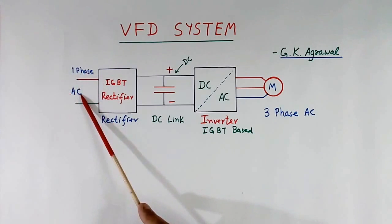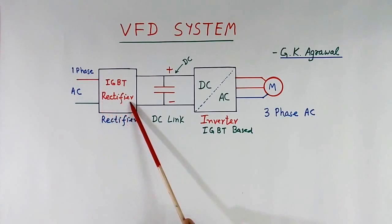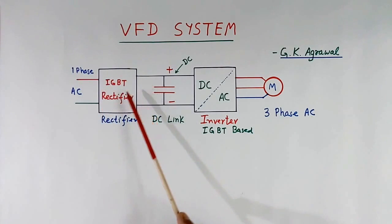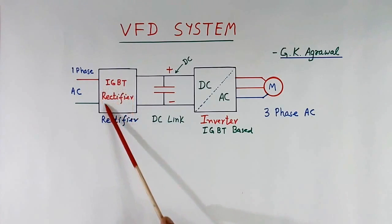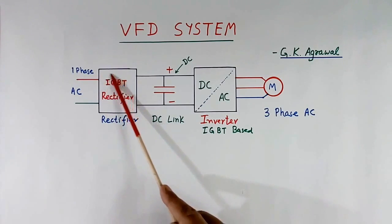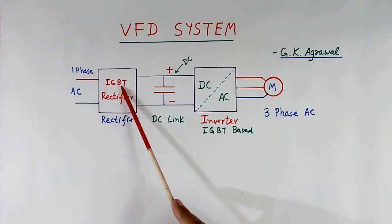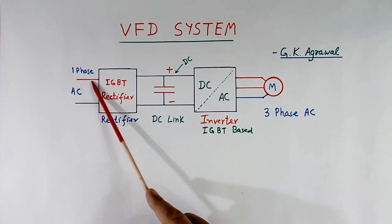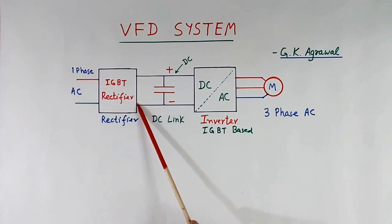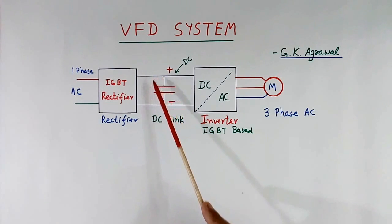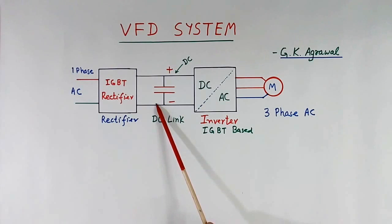Input will be single-phase AC. Rectifier function is to convert single-phase AC into DC. Rectifier is made using diode also, using IGBT also. Latest technology is IGBT based. Because of IGBT control, we can get unity power factor here. This is called the DC link. One capacitor is there. Voltage across this capacitor may be 650V DC, may be 750V DC, may be 780V DC, or may be 1800V. It may be anything, depending upon the system.